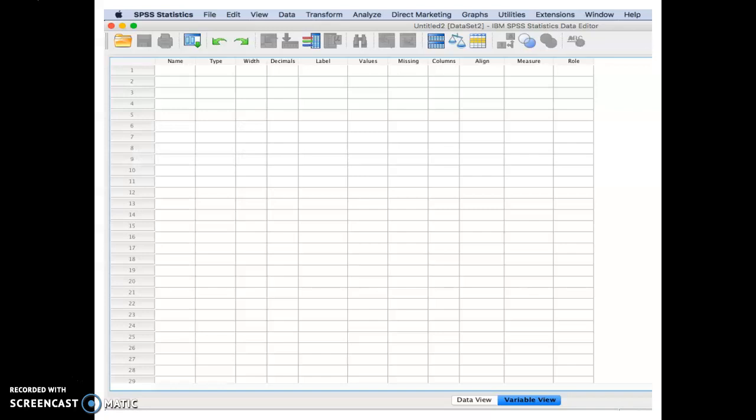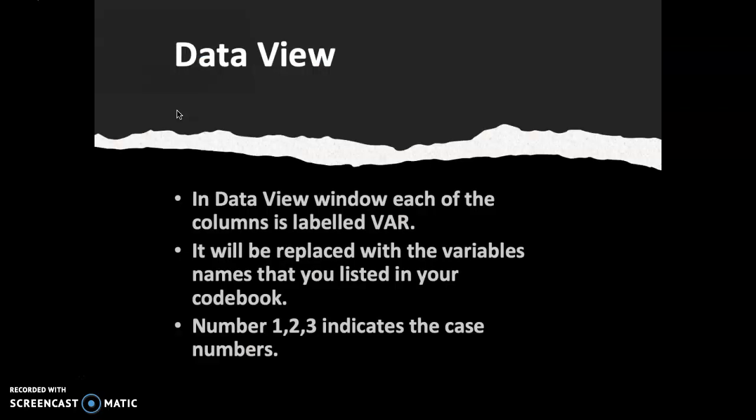So let us look back. Here we have name, type with decimal label values under the variable view. And we have variable 1, 2, 3, 4, 5, 6, and 7, and so on and so forth. So that is under variable view. But in data view, there is a place or a view where you will key in all the data that you have gathered from your sample.